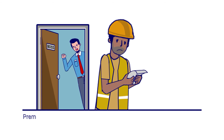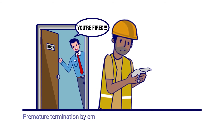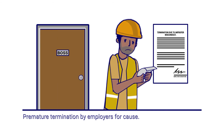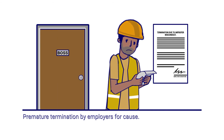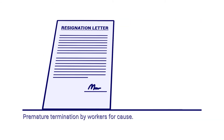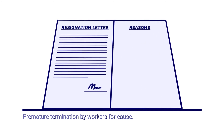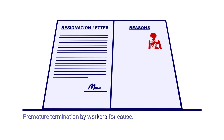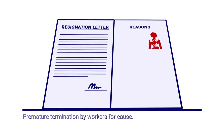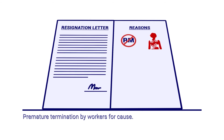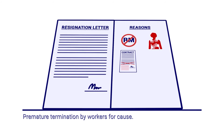Employers may terminate the contract prematurely without notice or compensation, for example for gross misconduct, in accordance with the employer's disciplinary procedures. Employers may also terminate the contract prematurely without notice or penalty in the event of harassment, abuse, or other serious violation of the workers' rights by the employers, including failure to pay wages or where contractual terms and conditions of employment have been unilaterally changed by the employer.